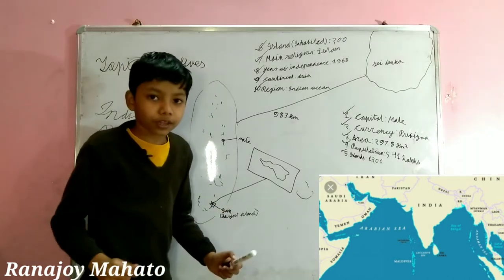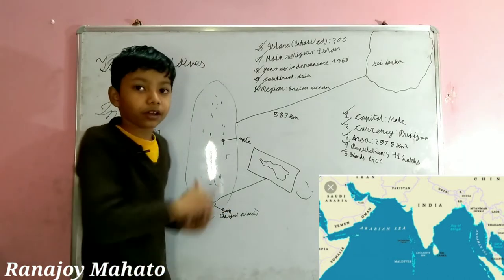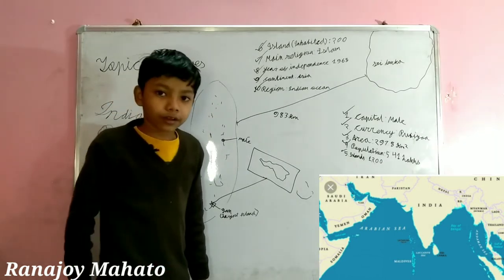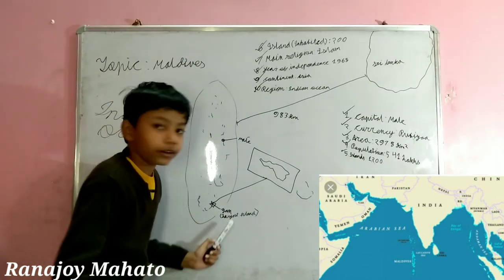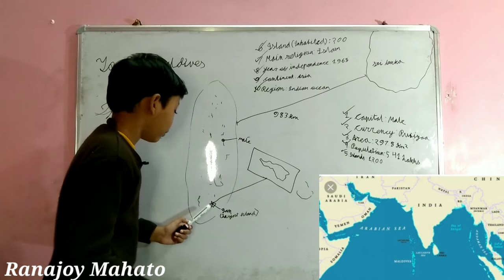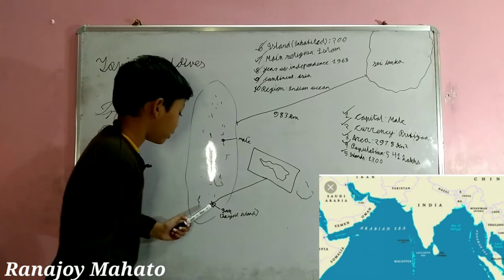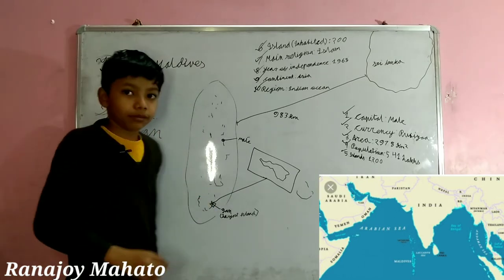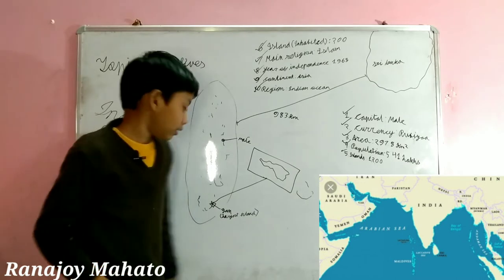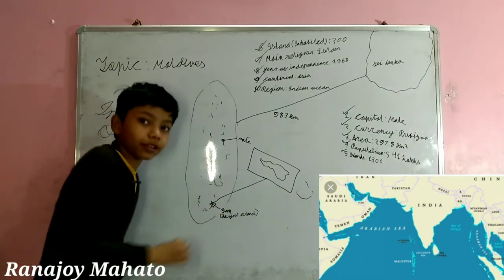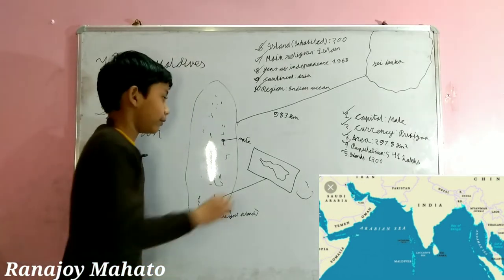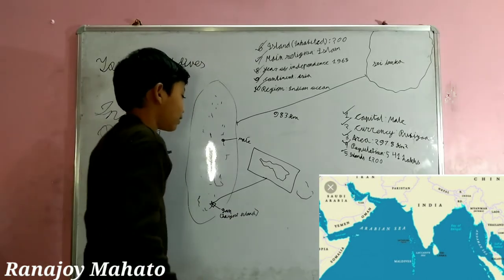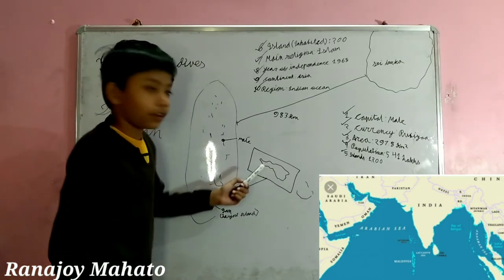Here's an island which is the biggest one among all the islands of Maldives. The island is GAN. GAN is located at the southernmost part of Maldives. You may think it's very small in size, but if you zoom closer, it will look like this. GAN looks like this.